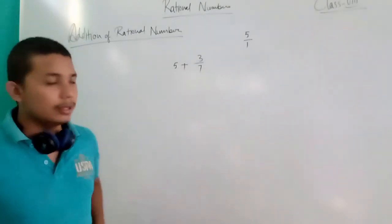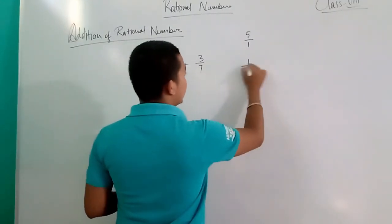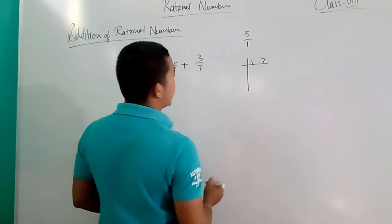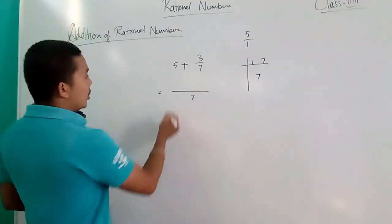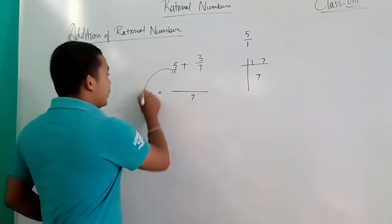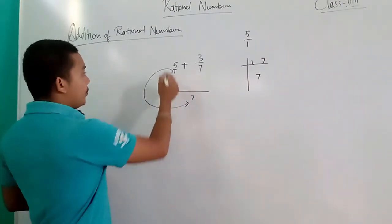So 1/7, no common factor except 1. That means 7 into 1, that is 7. So here 1 plus, so 1 goes into 7 how many times? 7.